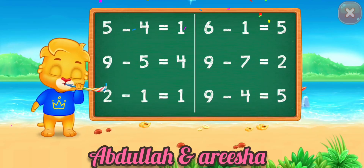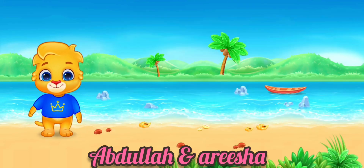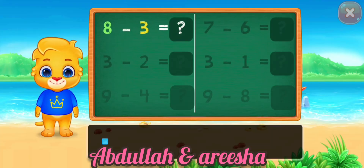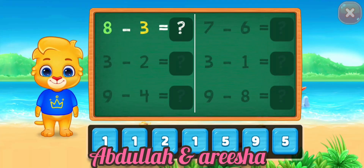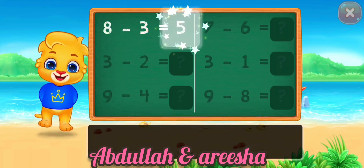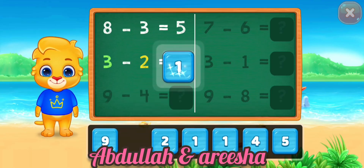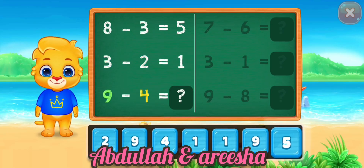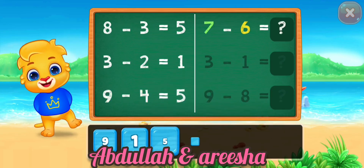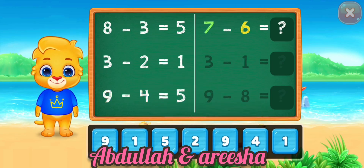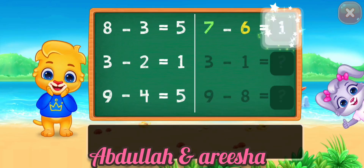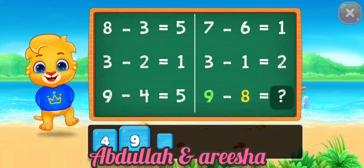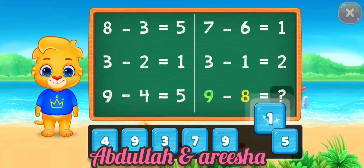Woohoo! 8 minus 3 is equal 5. 5. 3 minus 2 is equal 1. 1. 9 minus 4 is equal 5. 5. 7 minus 6 is equal 1. 1. 3 minus 1 is equal 2. 2. 9 minus 4 is equal 1. 2.